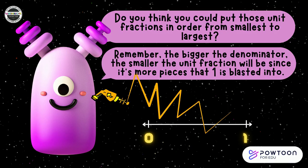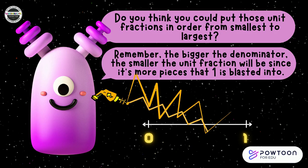Do you think you could put those unit fractions in order from smallest to largest? Remember, the bigger the denominator, the smaller the unit fraction will be, since it's more pieces that make up the whole. Here are all of the fractions you need to put in order: one half, one third, one fourth, one sixth, one eighth. Now pause the video and discuss with a partner how you can put them in order on the number line.